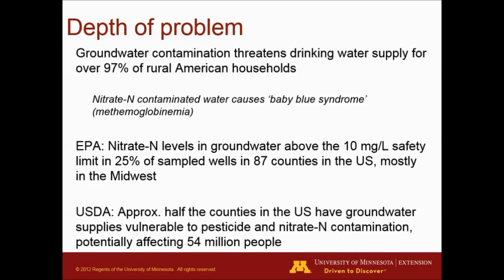But it's not only an issue of the Gulf of Mexico. Groundwater contamination threatens the drinking water supply for over 97 percent of rural American households. The main issue that we have is with infants — we can have this baby blue syndrome in nitrogen-contaminated waters. A study by the EPA showed that there were nitrate-nitrogen levels in groundwater above the 10 parts per million safety limit in about 25 percent of the sample wells in 87 counties in the U.S., mostly in the Midwest. Another study by the USDA found that approximately half of the counties in the U.S. have groundwater supplies vulnerable to pesticide and nitrate-nitrogen contamination, potentially affecting about 54 million people.